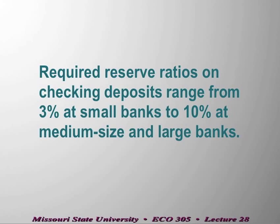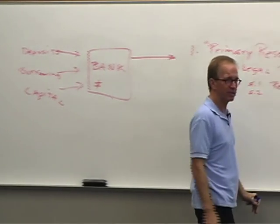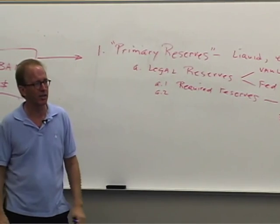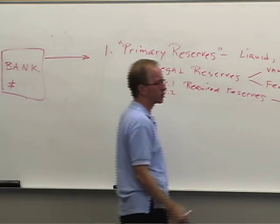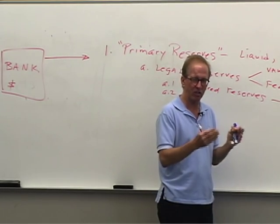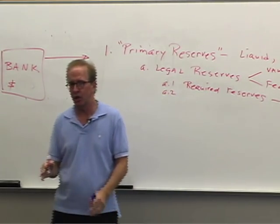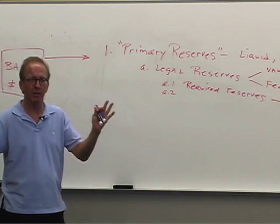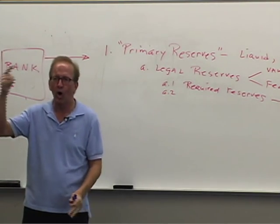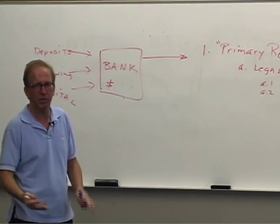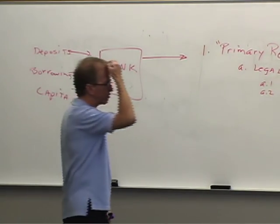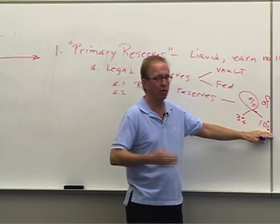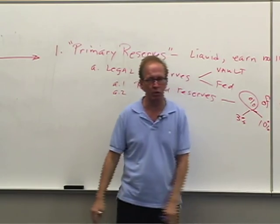Most banks — we've got about 7,000 — are small banks. But most deposits, if you looked at all checking deposits in the United States, around $700 billion, most of that is in medium and large banks. All 6,600 small community banks collectively may hold as much in checking deposits as one Bank of America. So most checking accounts are subject to the 10% reserve requirement.